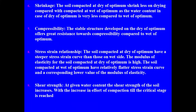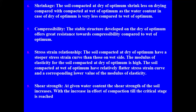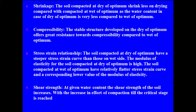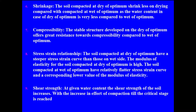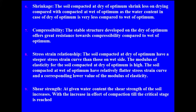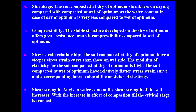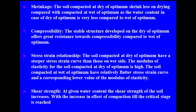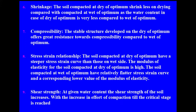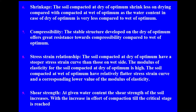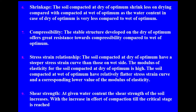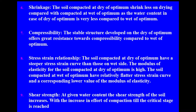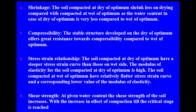Shrinkage: soil compacted dry of optimum shrinks less on drying compared to wet of optimum, as the water content in the dry optimum case is much less. Compressibility: the stable structure developed on the dry side of optimum offers greater resistance to compressibility compared to wet of optimum. Stress-strain relationship: soil compacted dry of optimum has a steeper stress-strain curve and a higher modulus of elasticity; soil compacted wet of optimum has a flatter stress-strain curve with lower modulus of elasticity. Shear strength: at a given water content, shear strength increases with increasing compaction effort until a critical stage is reached.